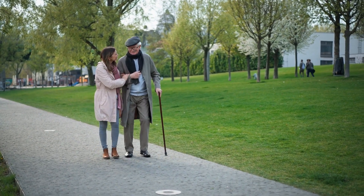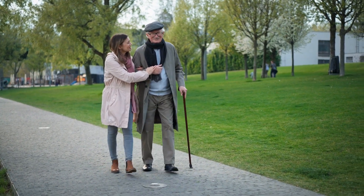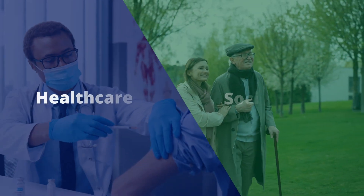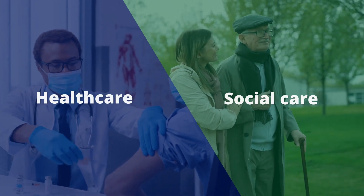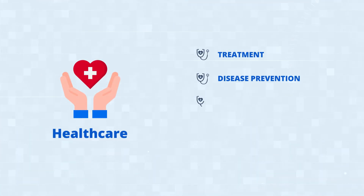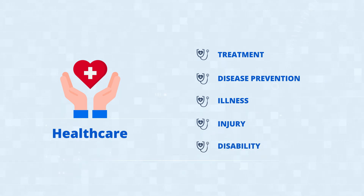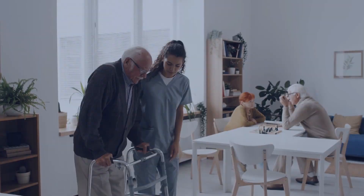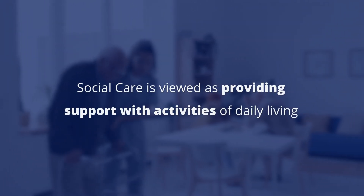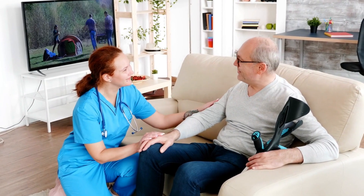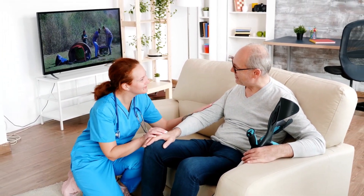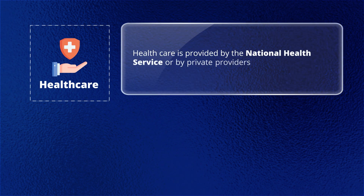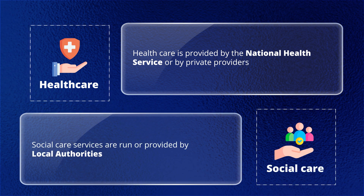Now let's look at the differences between healthcare and social care. Healthcare tends to refer to treatment, disease prevention, illness, injury or disability — it is concerned with the care or aftercare of someone with these needs. By contrast, social care is viewed as providing support with activities of daily living, and also covers maintaining independence and safeguarding. In terms of delivery, healthcare is provided by the National Health Service or private providers, while social care services are run or provided by local authorities.